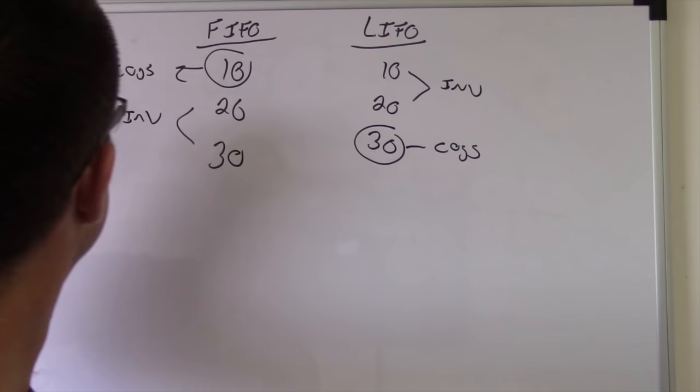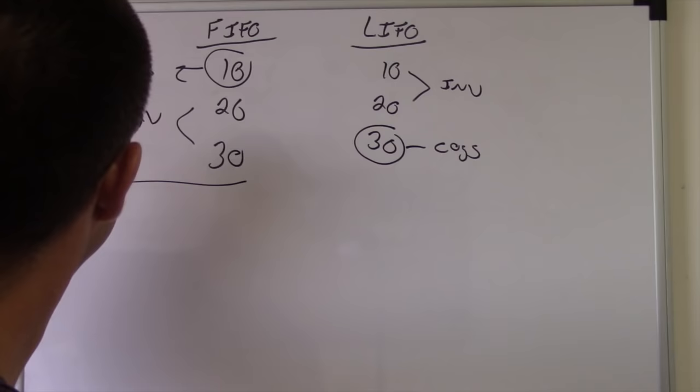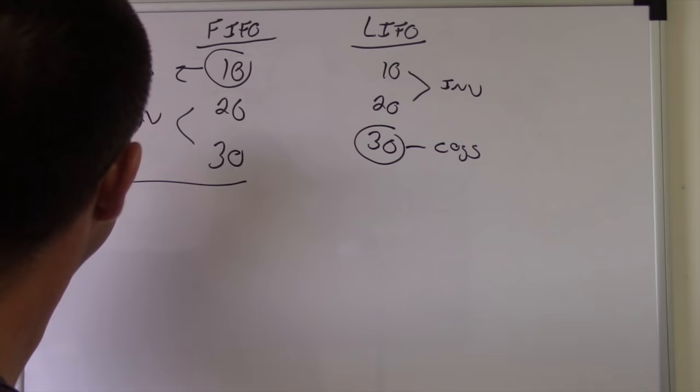This is lower, so this is higher. Inverse, stays with that higher. So COGS are higher, this is lower net income.